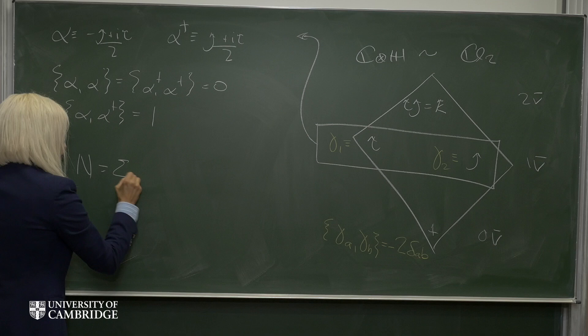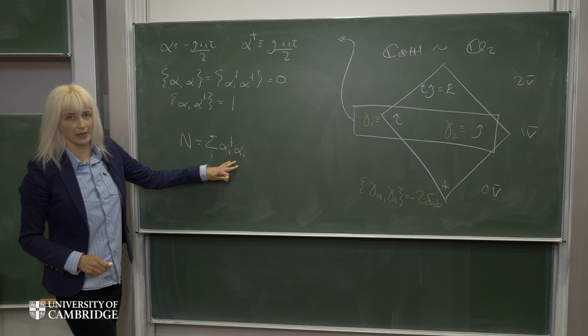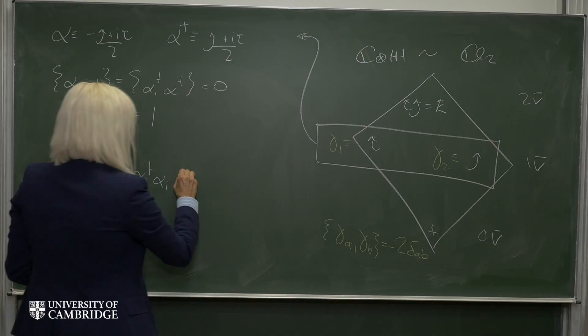Finally, we can write down a number operator in the usual way. But of course, we only have one alpha and one alpha dagger, so this number operator only has one term in it.